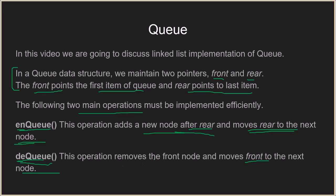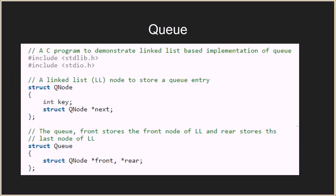To summarize: in the dequeue operation we remove the front node and move front to the next node, and in the enqueue operation we add the new node after the rear and then move the rear to the next node.